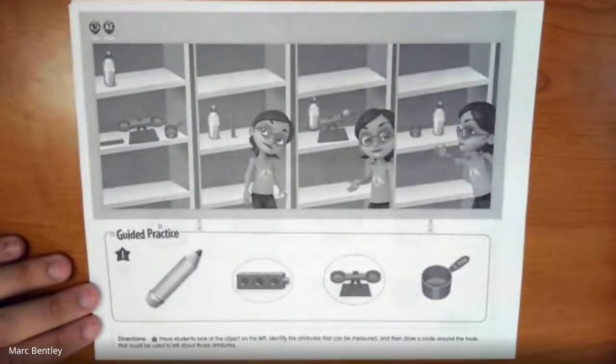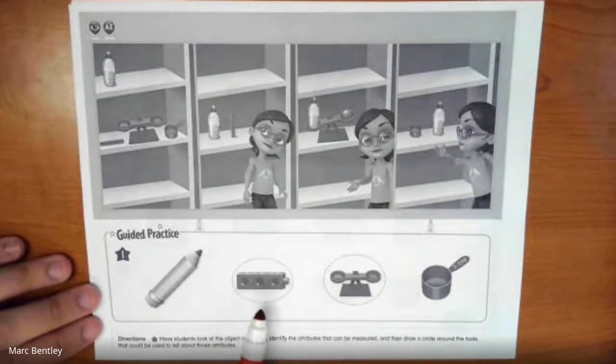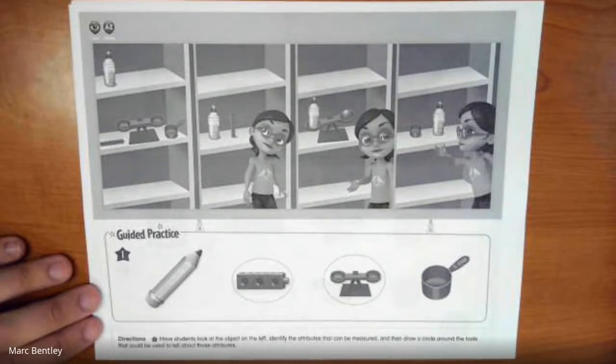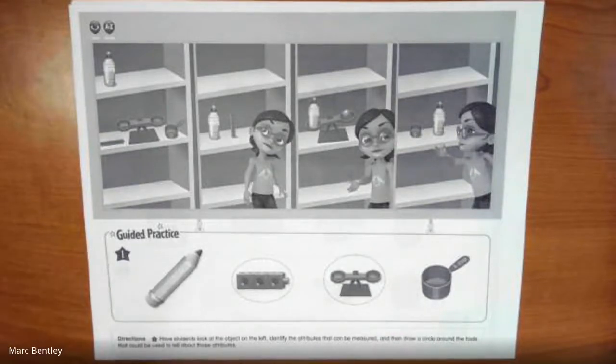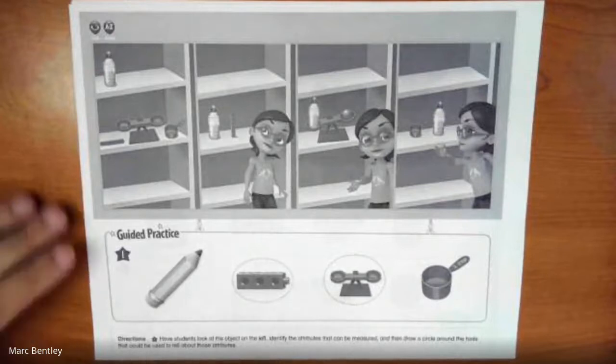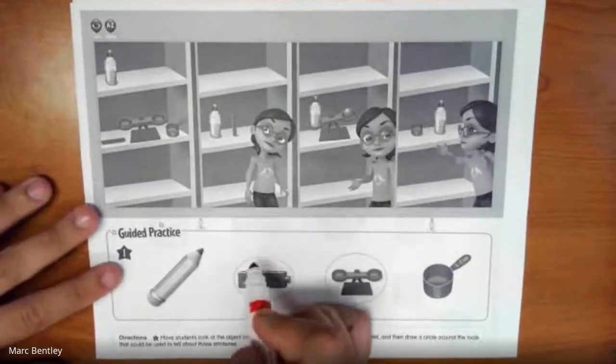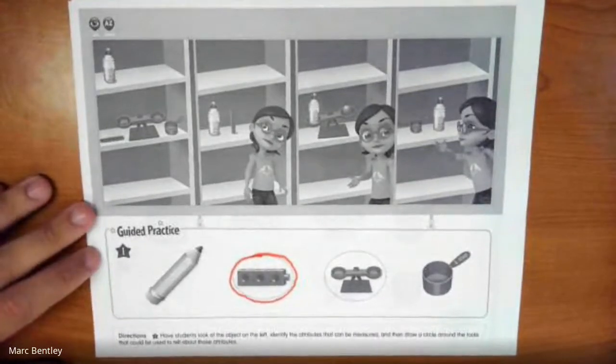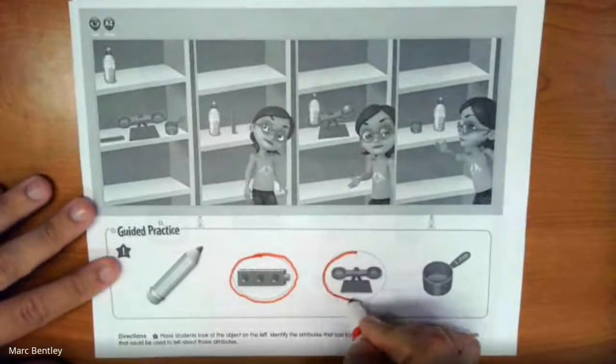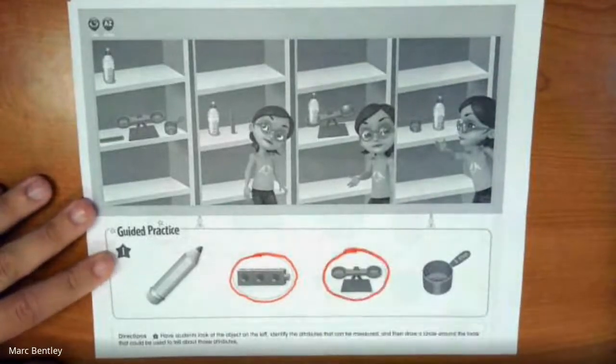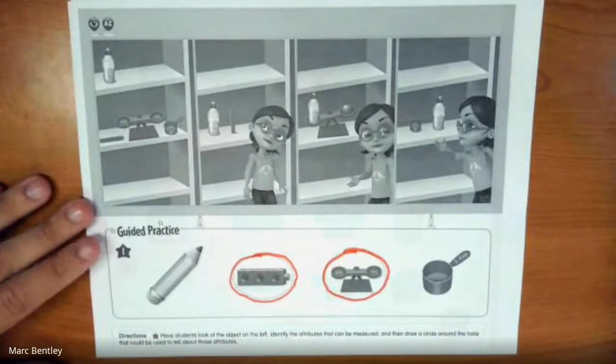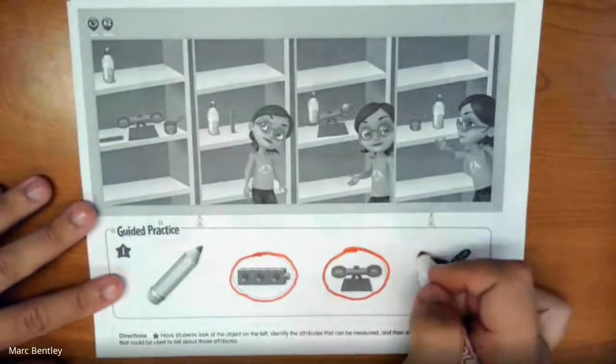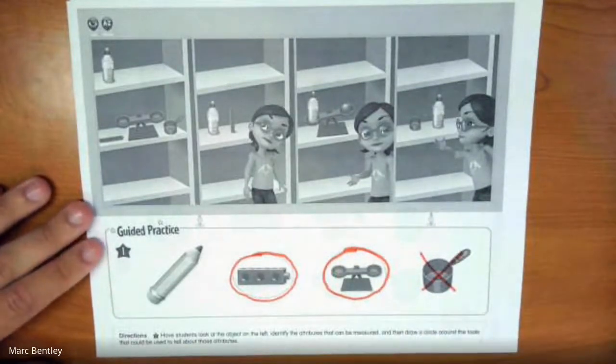We need to figure out whether we can measure the pencil's length, its weight, or its capacity. We can definitely measure the length of the pencil, so I'm going to circle that. We can definitely measure as well how much the pencil weighs, so I'm circling this one. But we can't really measure a pencil's capacity, so I'm going to put an X through that.